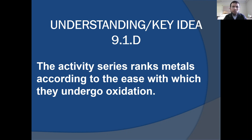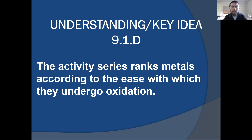Think about it as something that you used when we looked at single replacement reactions and determined whether or not a reaction would actually take place. But with our understanding of redox reactions and oxidizing and reducing agents, we can really start to think of the activity series as showing us how easy or difficult it would be for a substance to undergo oxidation or reduction.